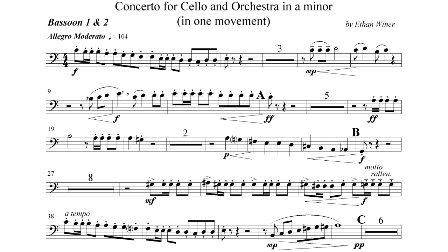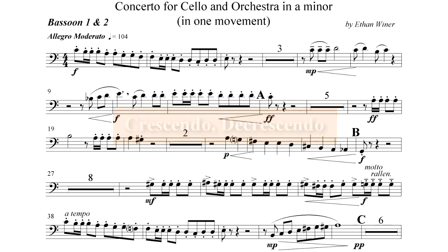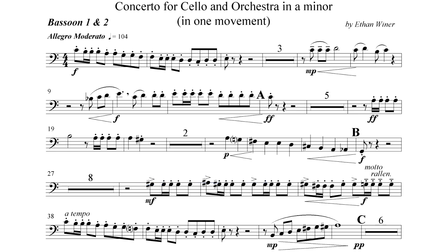Besides telling musicians how loudly to play generally with forte, mezzo piano, and so forth, additional instructions indicate to play progressively louder or softer. The standard terms are crescendo and decrescendo for progressively louder and softer, respectively. Some composers write those words into the score, but hairpin marks are often used as shorthand. There is also a dynamic marking called an accent — the greater-than symbol above a note — that tells the musician to play just that one note louder than all the others, to add emphasis or to better define the beat.